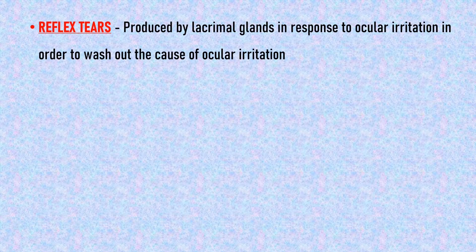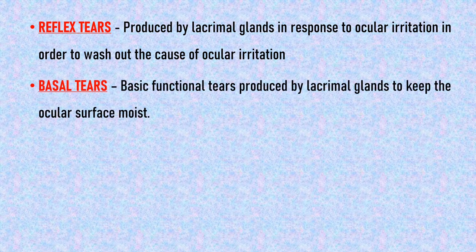The tears produced by the lacrimal glands are of three types: reflex tears, basal tears, and psychogenic or emotional tears. Reflex tears are produced by the lacrimal glands in response to any irritation of the ocular surface, to wash out the cause of ocular irritation. Basal tears are produced by the lacrimal glands to keep the surface of the eye moist — they are the basic functional tears produced to keep the ocular surface healthy and smooth.